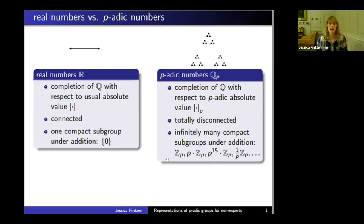But for the p-adic numbers, there are infinitely many compact open subgroups—Z_p, p times Z_p, p squared times Z_p, and so on. We have a basis of the identity formed by compact open subgroups, and that makes a huge difference when studying these objects.